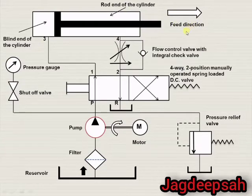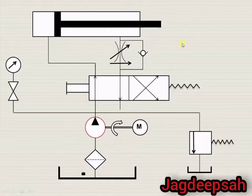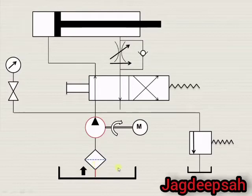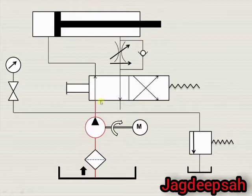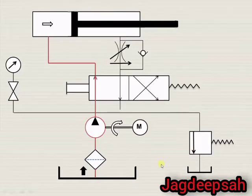Now let us try to understand with a simple animation how this circuit works. As the electric motor starts rotating, it drives the pump and the flow of liquid from the reservoir first enters into the filter. Then from the filter it enters into the pump, and from the pump it enters into the direction control valve. In the left envelope mode, the fluid will enter on the blind end of the cylinder and cause the piston to move in the forward direction.